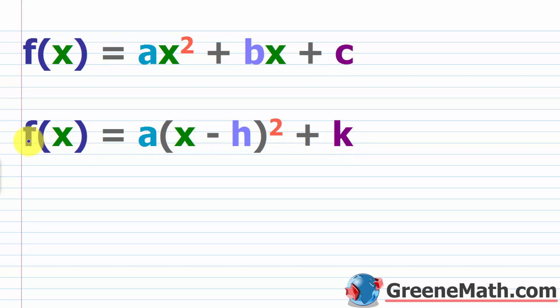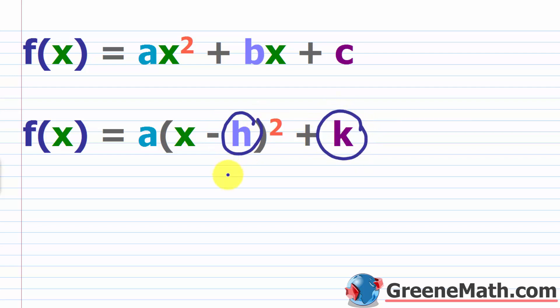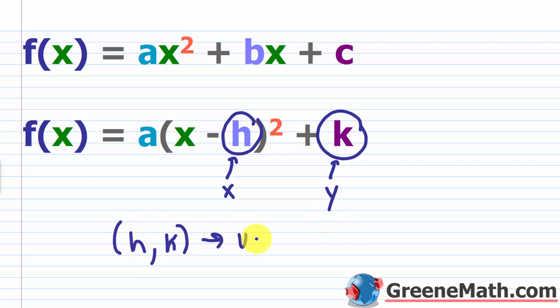I'm going to refer to this as standard form, and the vertex form is f(x) = a times the quantity (x − h)² + k. The reason most people say this is vertex form is that you can immediately, upon inspection, find out where the vertex is. The vertex will occur at h comma k — h is the x coordinate and k is the y coordinate.